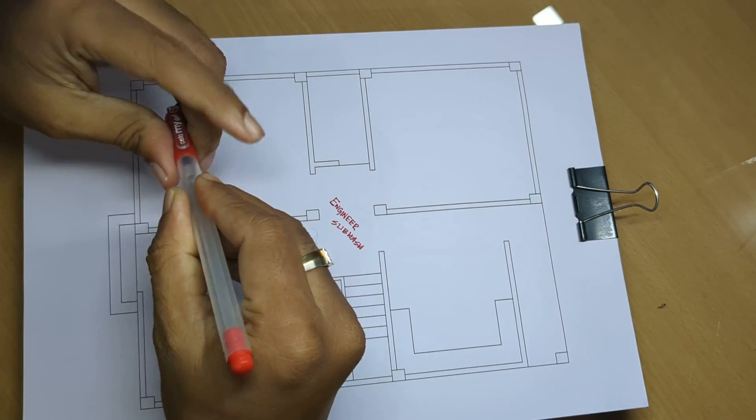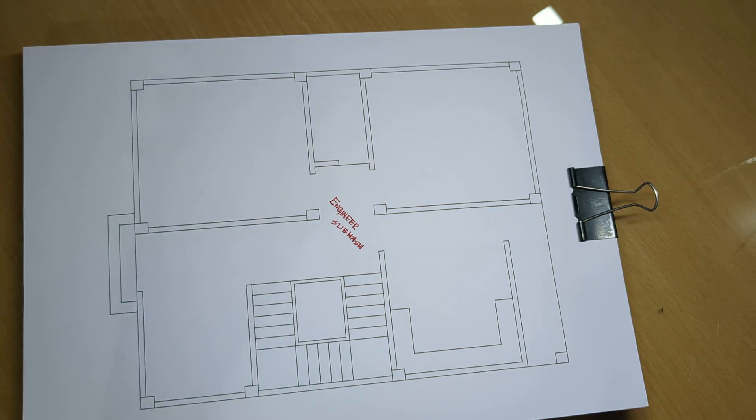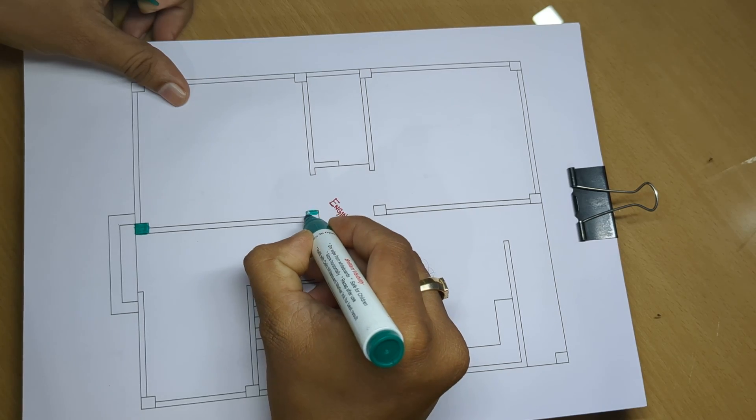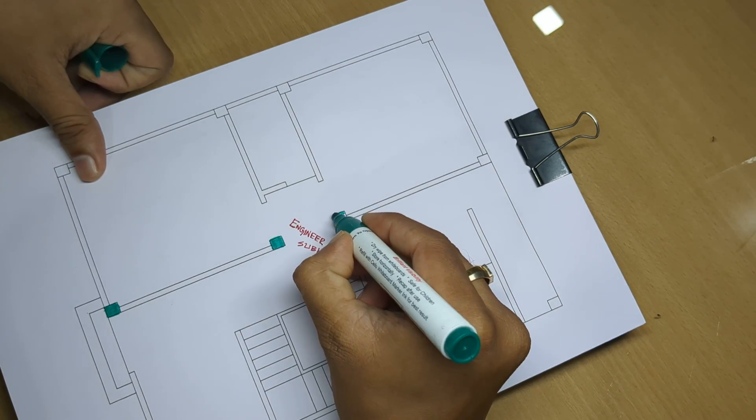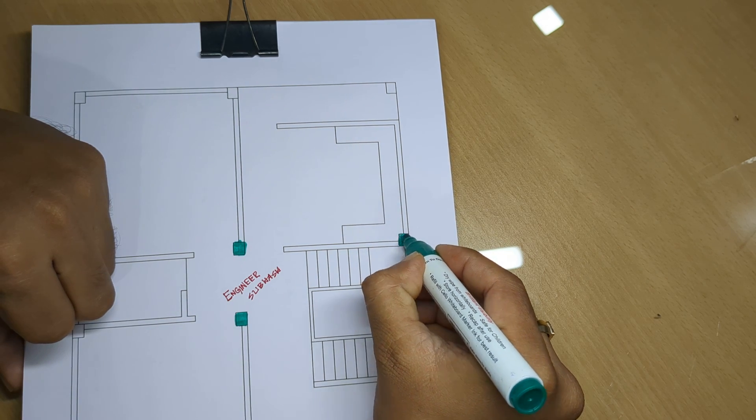858 square feet home plan design. The column size is 10 by 12 inches.